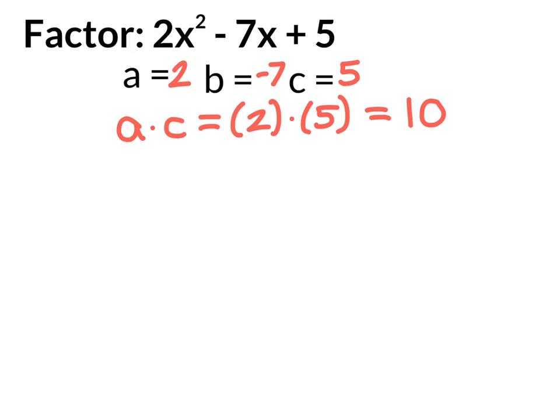Now we're just like normal factoring. We're going to look at two factors of 10 that multiply to give us 10 and add to give us negative 7. Those are going to be negative 2 and negative 5.